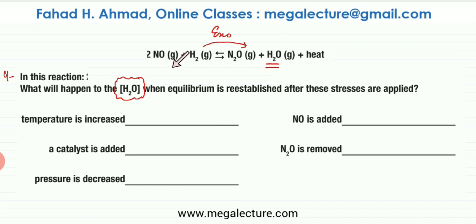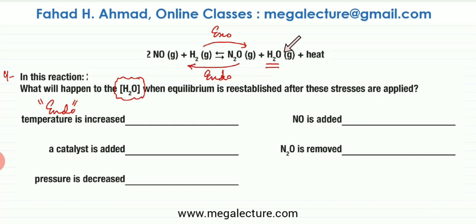The first part is that temperature is being increased. Le Chatelier's principle states that the endothermic reaction would be favored when temperature increases. The endothermic reaction here is the backward reaction. If the backward reaction happens, the quantity of H2O would decrease because H2O and N2O get converted back into reactants. So H2O decreases.